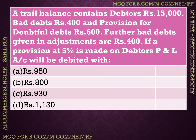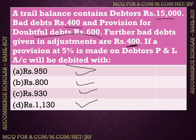The next question: a trial balance contains debtors of Rs. 15,000, bad debts of Rs. 400, and provision for doubtful debts of Rs. 600. Further, bad debts given in adjustments are Rs. 400. If a provision at 5% is made on debtors, the profit and loss account will be debited with — options: (A) Rs. 950, (B) Rs. 800, (C) Rs. 930, (D) Rs. 1,130. The correct answer is Option C — Rs. 930.